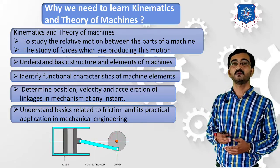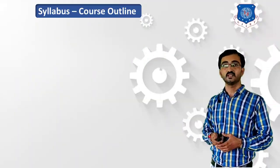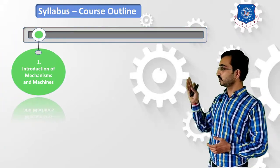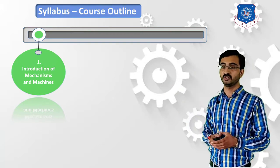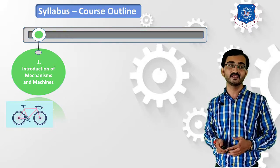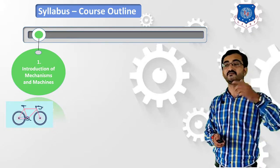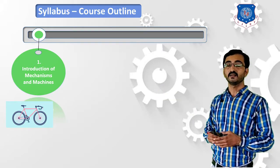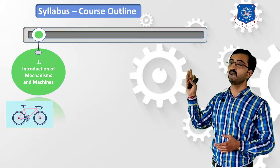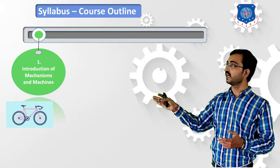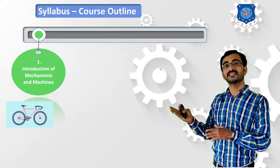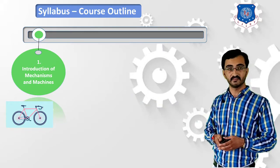Now let's learn the syllabus or course outline of this subject. In the first chapter, known as the Introduction of Mechanisms and Machine, you will be introduced to various mechanisms and machines. For example, a bicycle — we use it in our day-to-day life, and it is the best example of a mechanism. We give mechanical rotation as input and get linear motion of the vehicle as output.